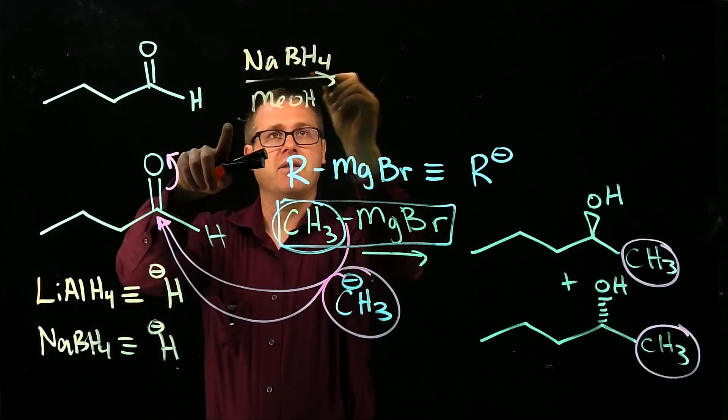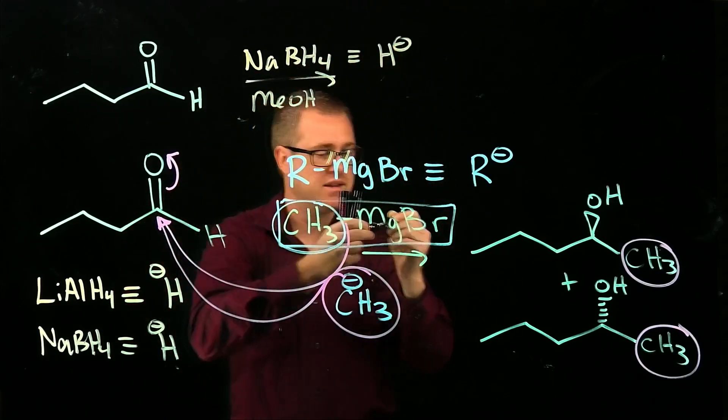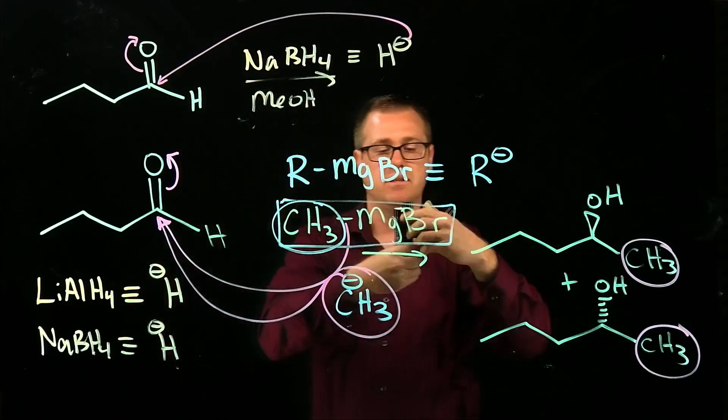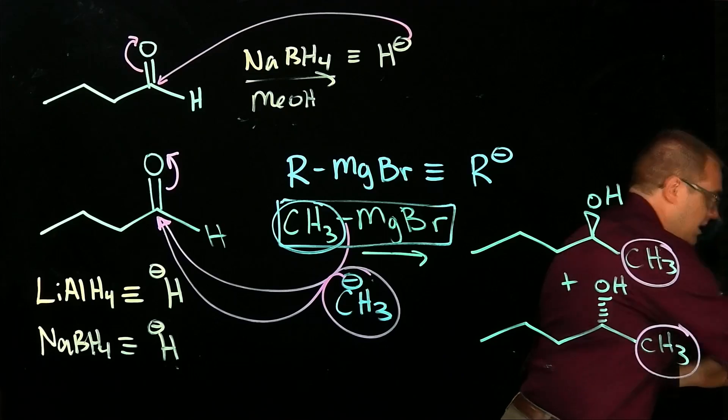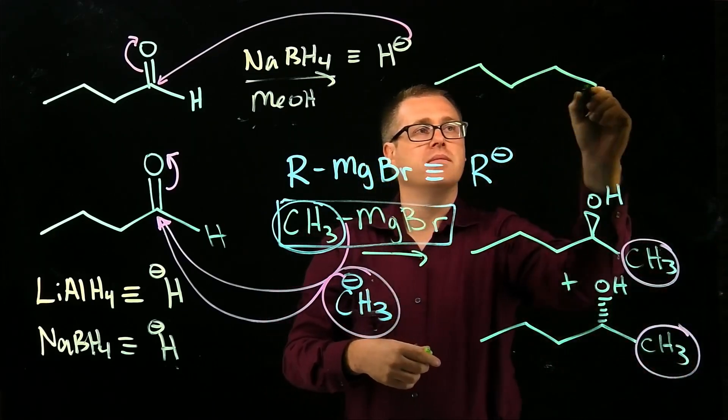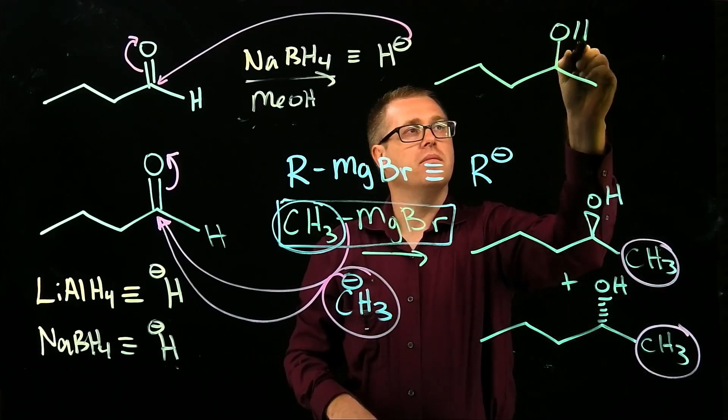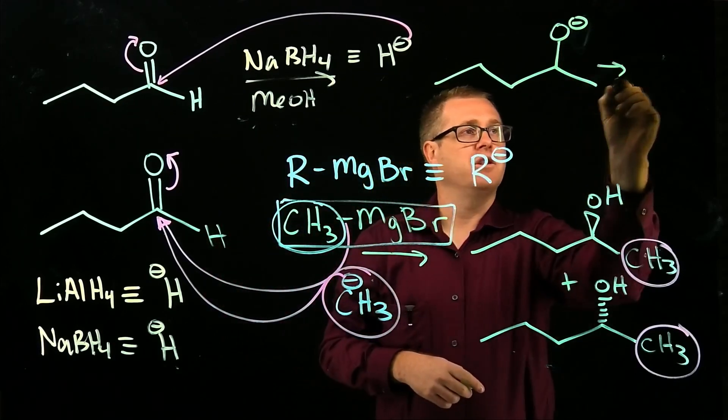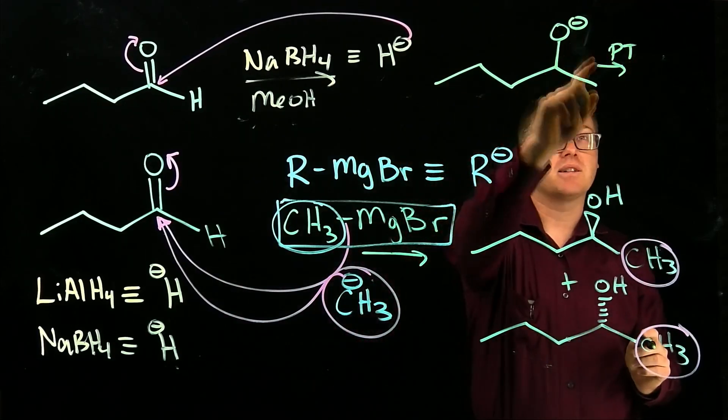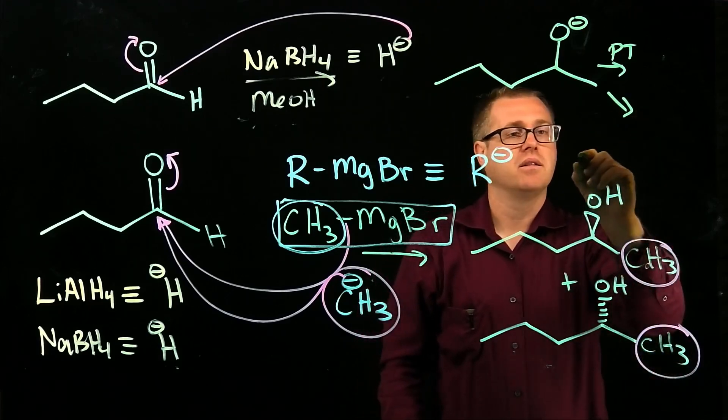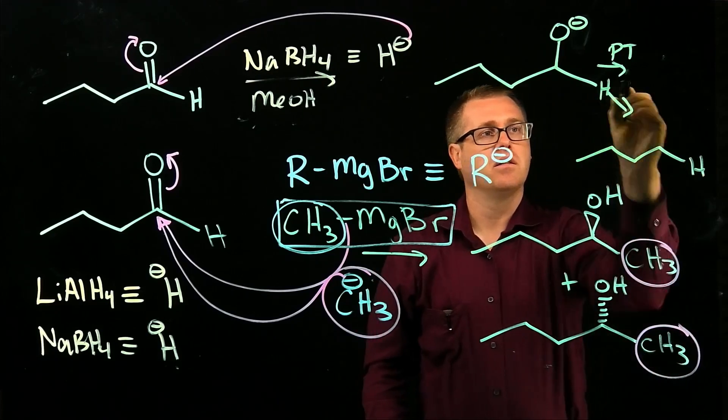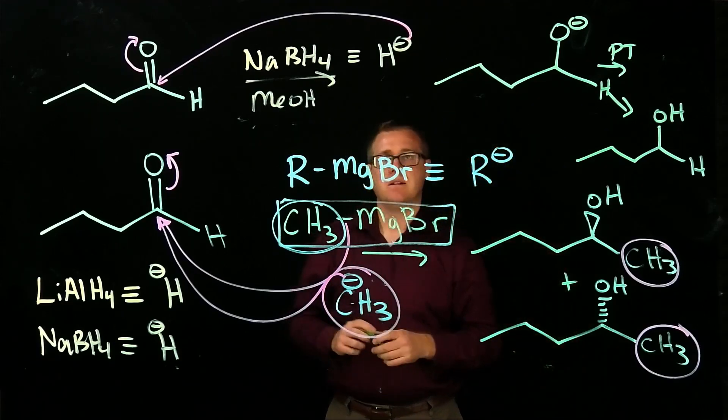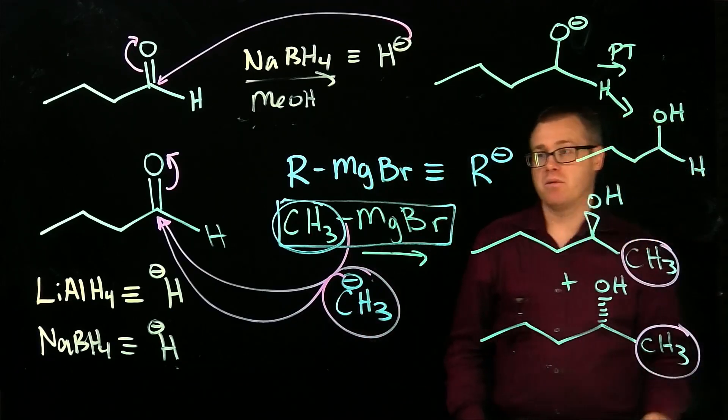So if we wanted to reduce this with sodium borohydride and some methanol, mechanistically, you could say this guy right here is simply H-, so that H- will come in and attack like that, which will then give us our product. Now I'm skipping the protonation, it would be like this, and then you'd have to do a proton transfer to protonate the alkoxide, which would then turn us into our alcohol.